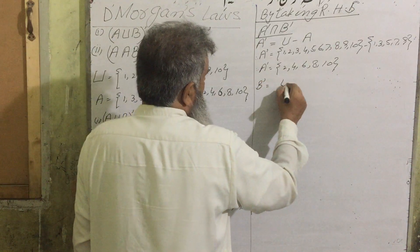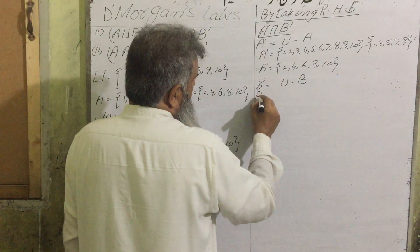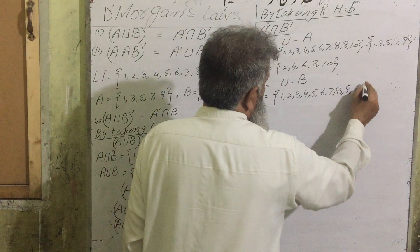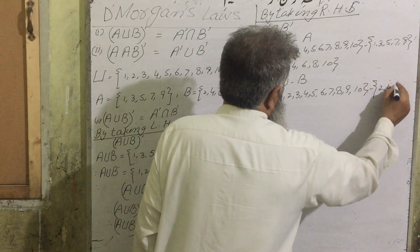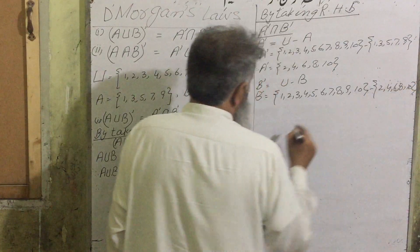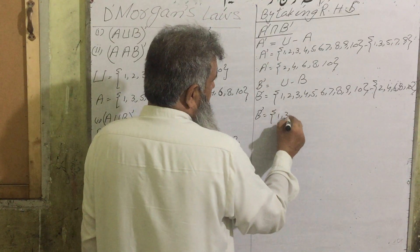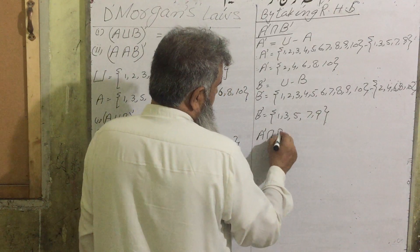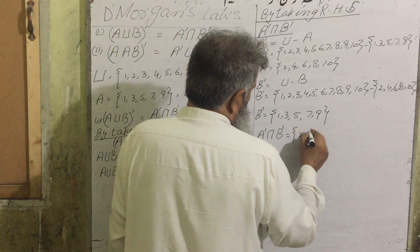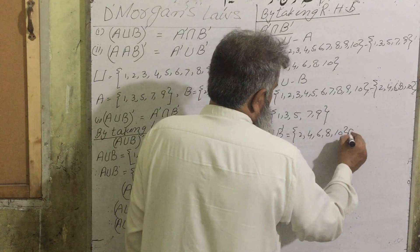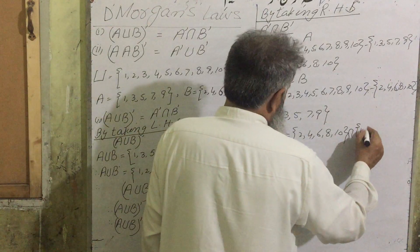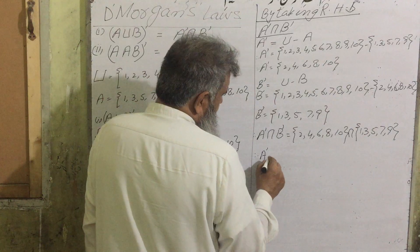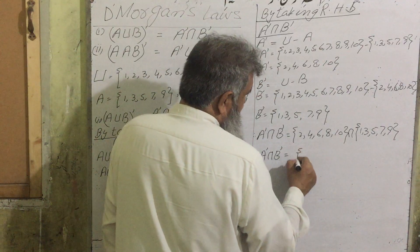B complement = universal set minus B = {1,2,3,4,5,6,7,8,9,10} minus {2,4,6,8,10}. So B complement = {1,3,5,7,9}. Therefore A complement intersection B complement = {2,4,6,8,10} ∩ {1,3,5,7,9} = null set.